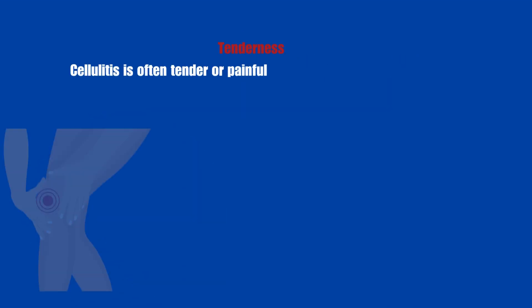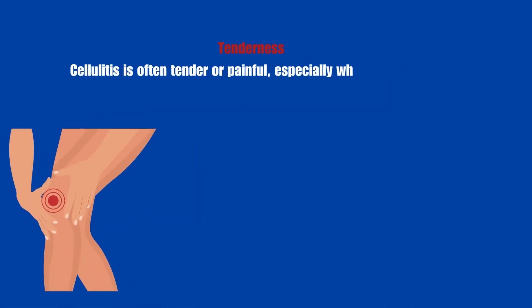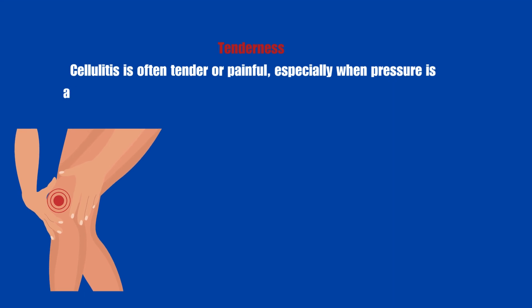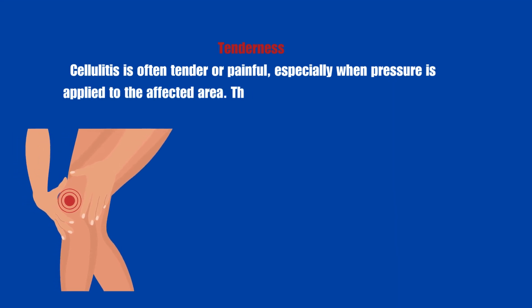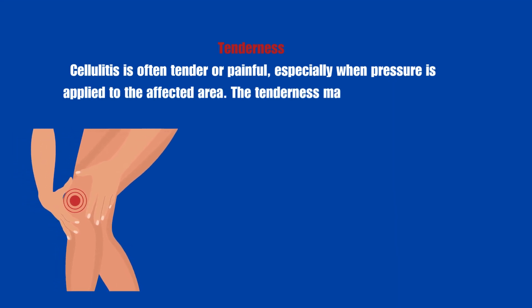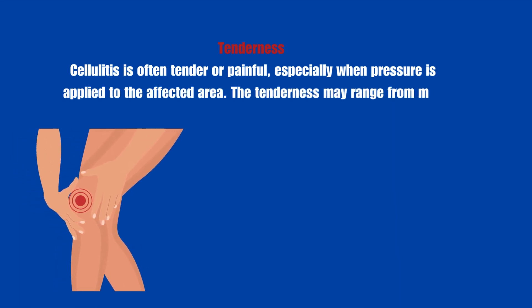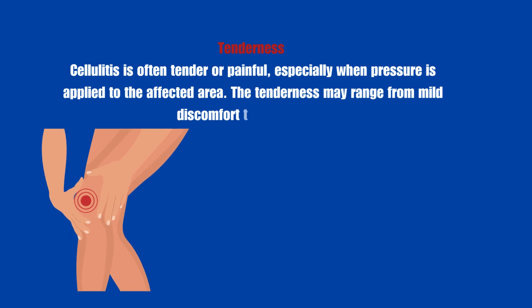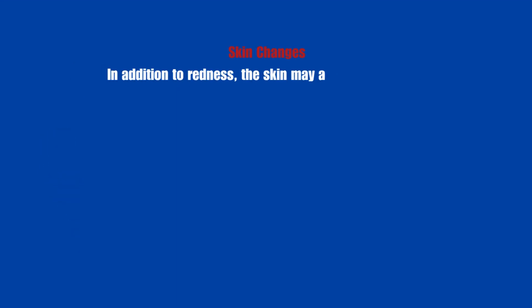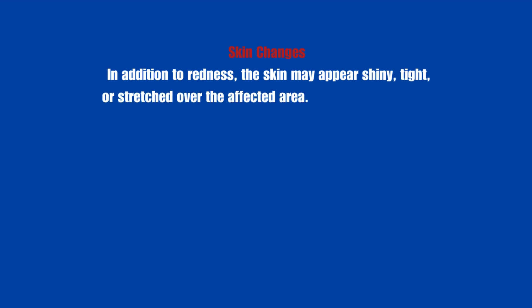Tenderness: Cellulitis is often tender or painful, especially when pressure is applied to the affected area. The tenderness may range from mild discomfort to severe pain. Skin changes: In addition to redness, the skin may appear shiny, tight, or stretched over the affected area.